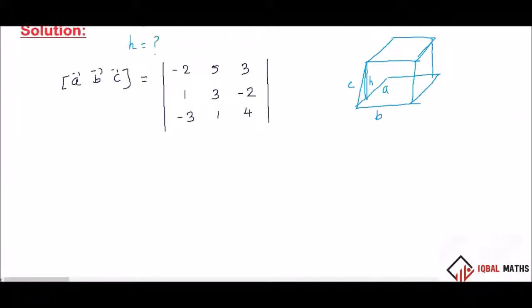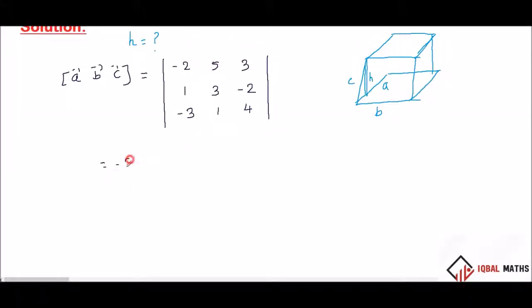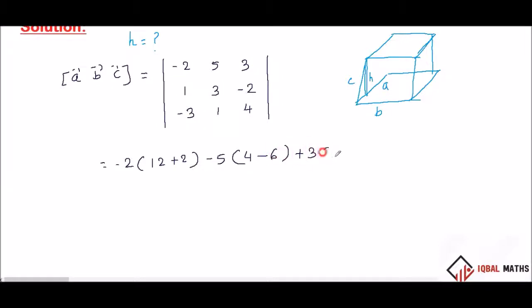So, volume is equal to: minus 2 times (3 into 4 = 12, minus 1 into minus 2 = minus 2), minus 5 times (1 into 4 = 4, minus 3 into minus 2 = plus 6), plus 3 times (1 into 1, minus 3 into 3 = minus 9).